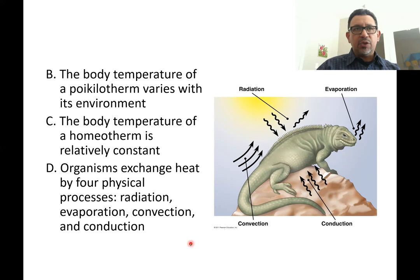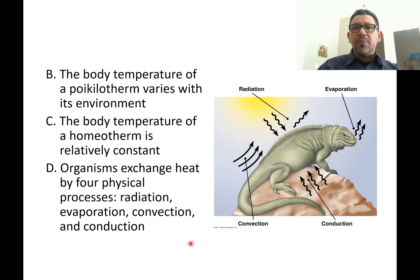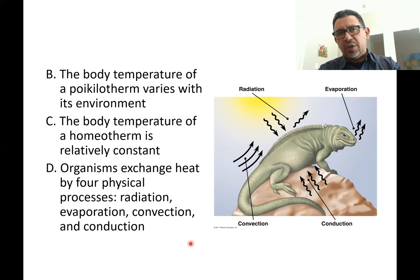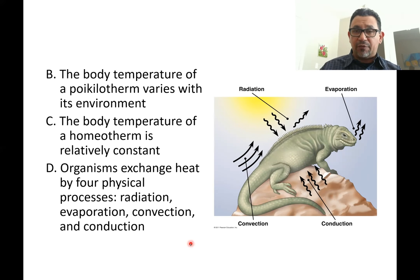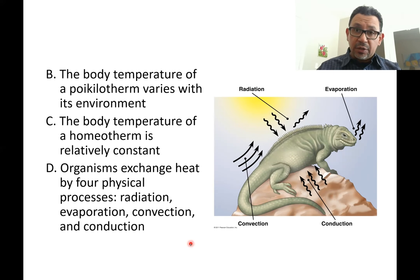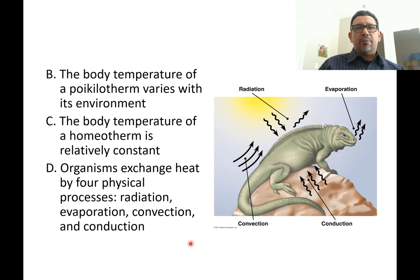Poikilotherms are not necessarily ectothermic. We may find endotherms, like some mammals — such as the naked mole rat — that maintain a body temperature that fluctuates when the tunnels where they live underground get cooler, their body temperature can also drop. Even though they generate some heat, they allow their body temperature to drop when tunnels get cold. If those tunnels get too hot, they allow their body temperature to increase accordingly. So an animal can be both an endotherm and a poikilotherm.